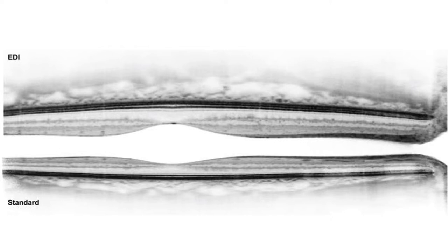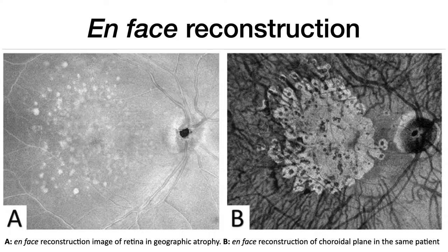There is another technique in spectral domain: if we focus a little bit deeper, the image is inverted, as seen in the top panel, and now we can see more choroidal detail. This is called enhanced depth imaging. Nowadays, companies have included a protocol that inverts the image back to the orientation we are accustomed to, but in reality when we first acquire the image it is inverted, and then the software re-inverts it.